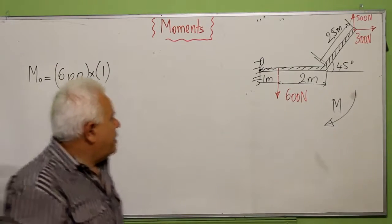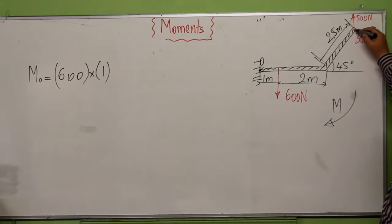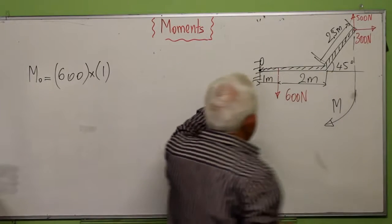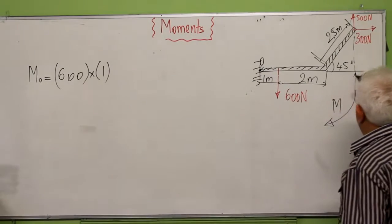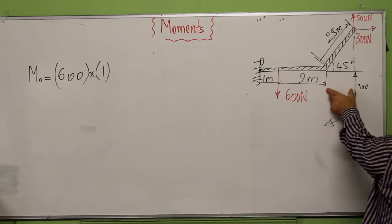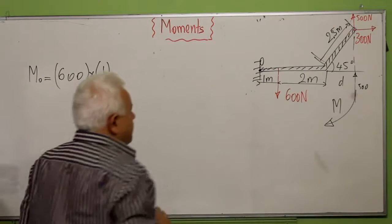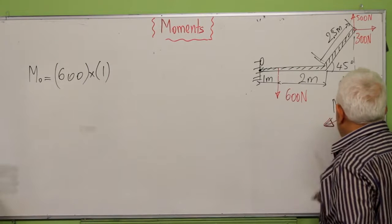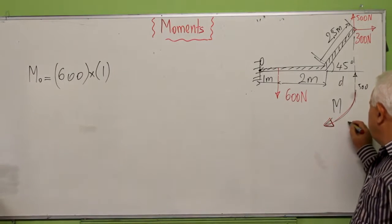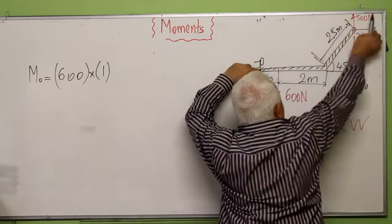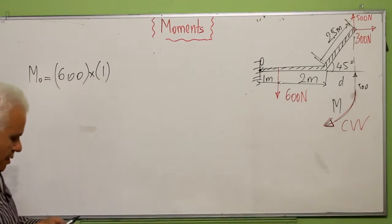Plus this force — its line of action is here. The distance that separates this force of 500 newtons is 1 meter plus 2 meters, plus this distance here, D. You have to notice that because I have chosen the positive moment as clockwise, this 500 newtons will make the system turn in the other side — anticlockwise.